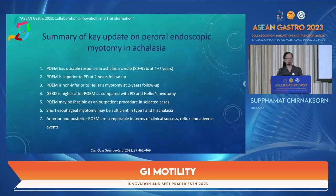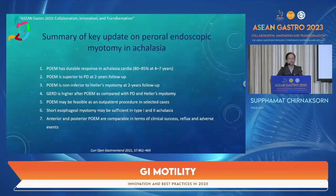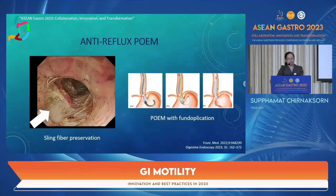POEM may be viable as an outpatient procedure in selected cases. We can do short myotomy in achalasia type 1 or type 2. Anterior and posterior POEM are comparable in clinical success, reflux events, and adverse events. Two techniques can help prevent GERD after POEM: the first is sling fiber preservation — avoiding cutting the sling fiber reduces reflux; the second option is combining POEM with fundoplication.